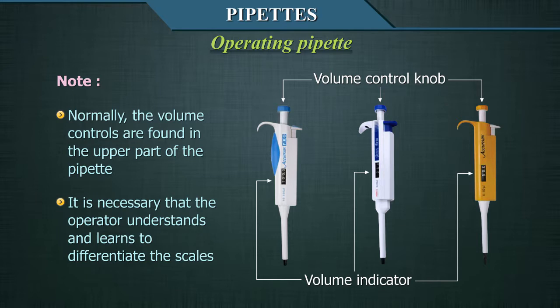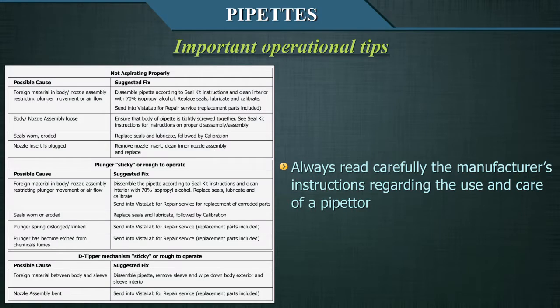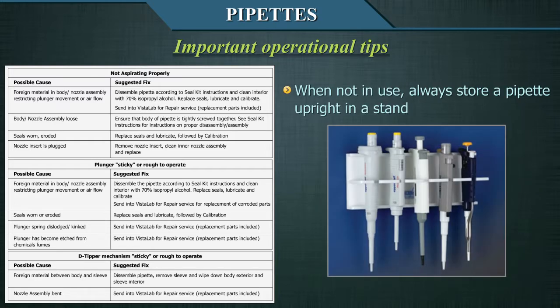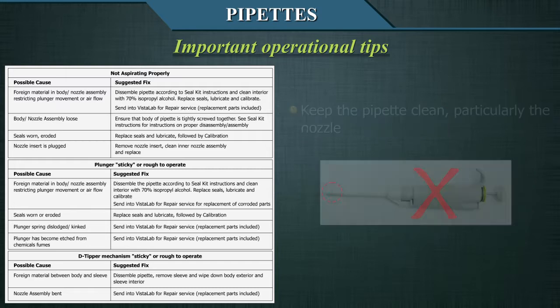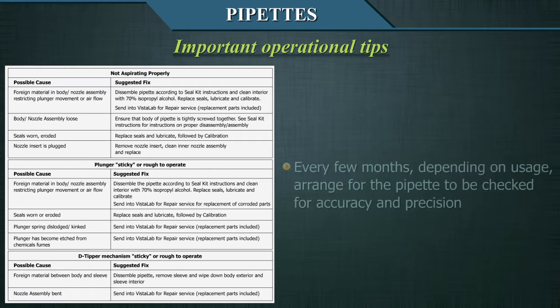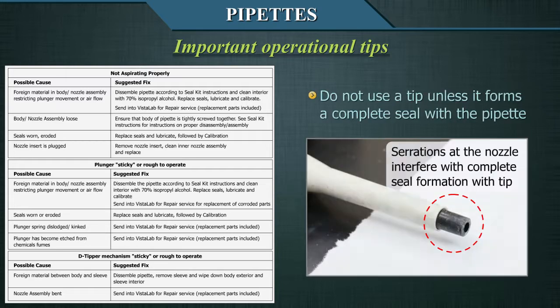Some important operational tips: always read carefully the manufacturer's instructions regarding the use and care of a pipetter. When not in use, always store a pipette upright in a stand. Never leave a pipette on its side when a tip is attached and contains fluid. Keep the pipette clean, particularly the nozzle. Every few months, depending on usage, arrange for the pipette to be checked for accuracy and precision. Do not use a tip unless it forms a complete seal with the pipette.